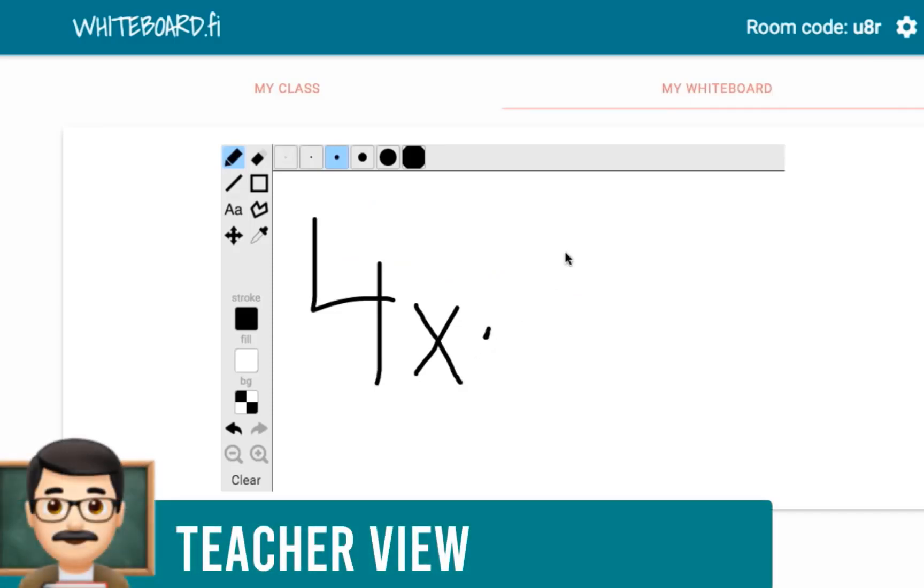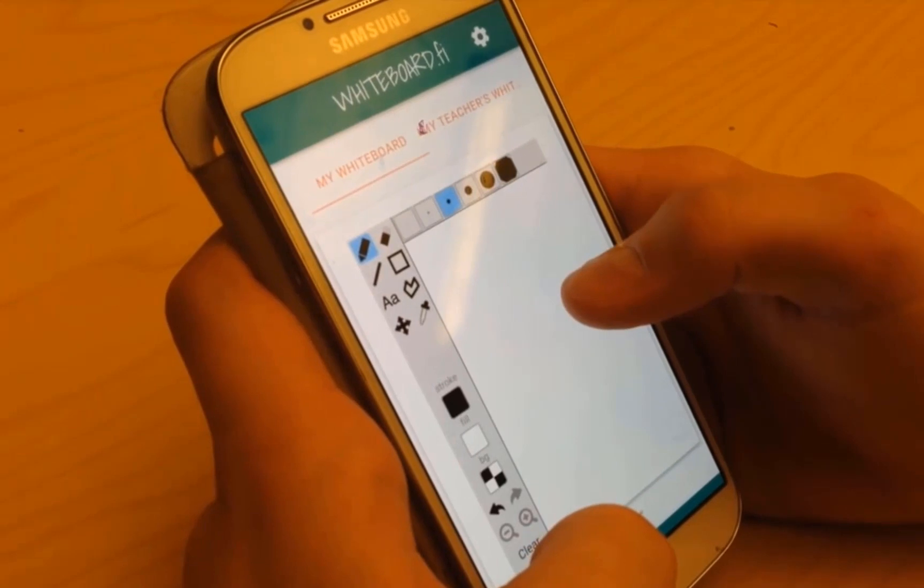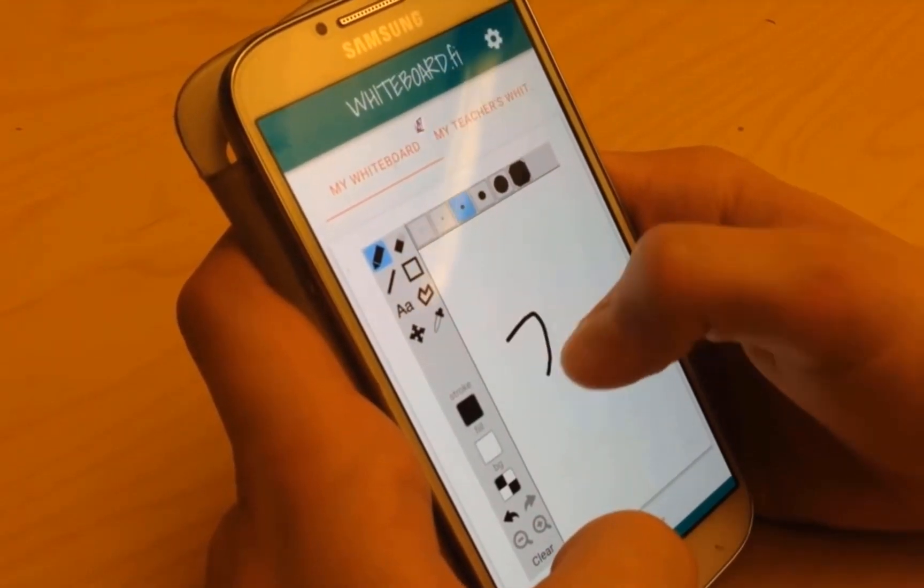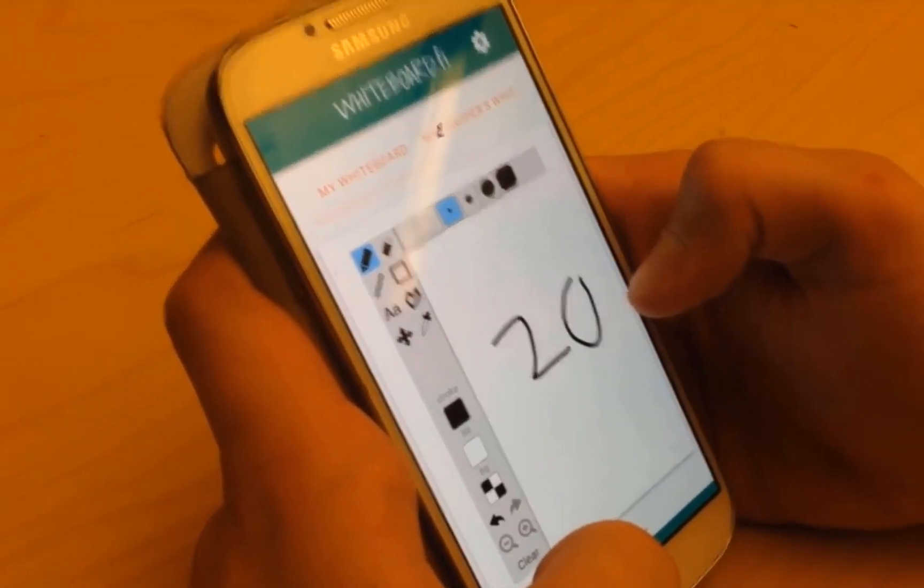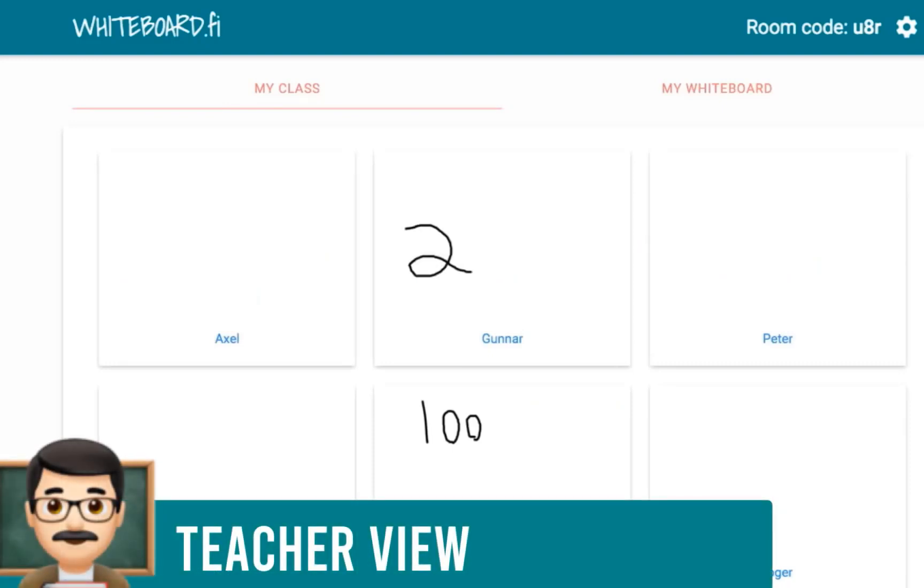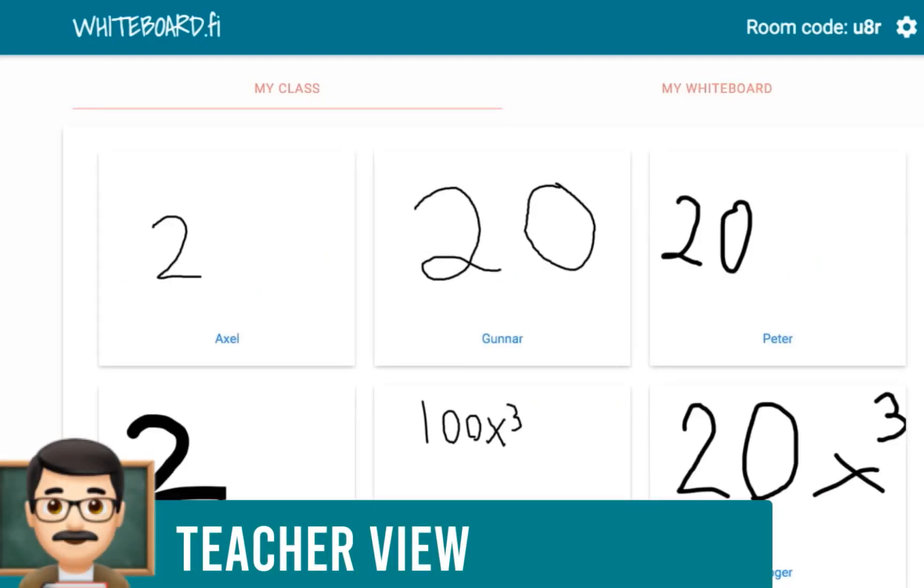As the teacher, I can write a problem on my whiteboard which the students can see and then on the student whiteboard they can practice that problem. For my teacher view, I'll be able to see every student whiteboard in my class and I can view their answers in real time.